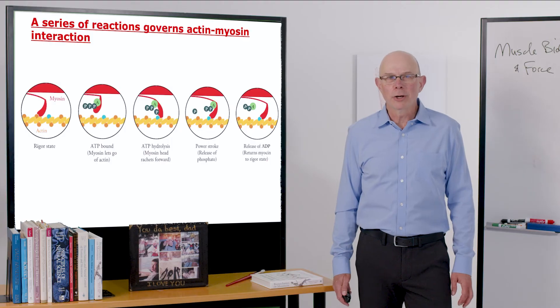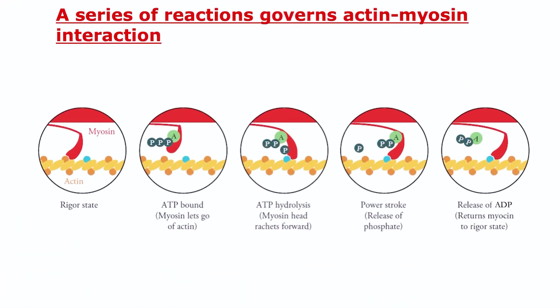A series of reactions governs actin-myosin interaction. If you look all the way over here, we'll go through these sequences. In this first step, we call the rigor state, myosin is bound to actin. You might have heard of rigor mortis. That's what happens after death. Your body goes stiff. That is a rigor state. There's no energy there, and your body goes stiff. That's exactly this myosin bound to actin that produces that. Step one.